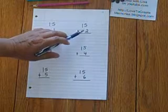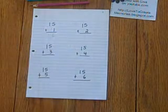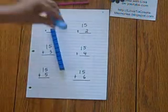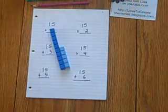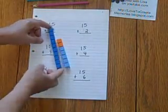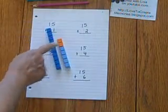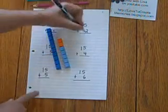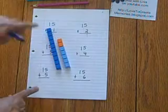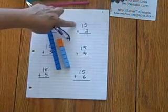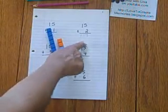15 plus 2 equals what? 15 plus 2. 5 plus 2 equals 7. 1 plus 0 equals 1. 15 plus 2 equals 17.